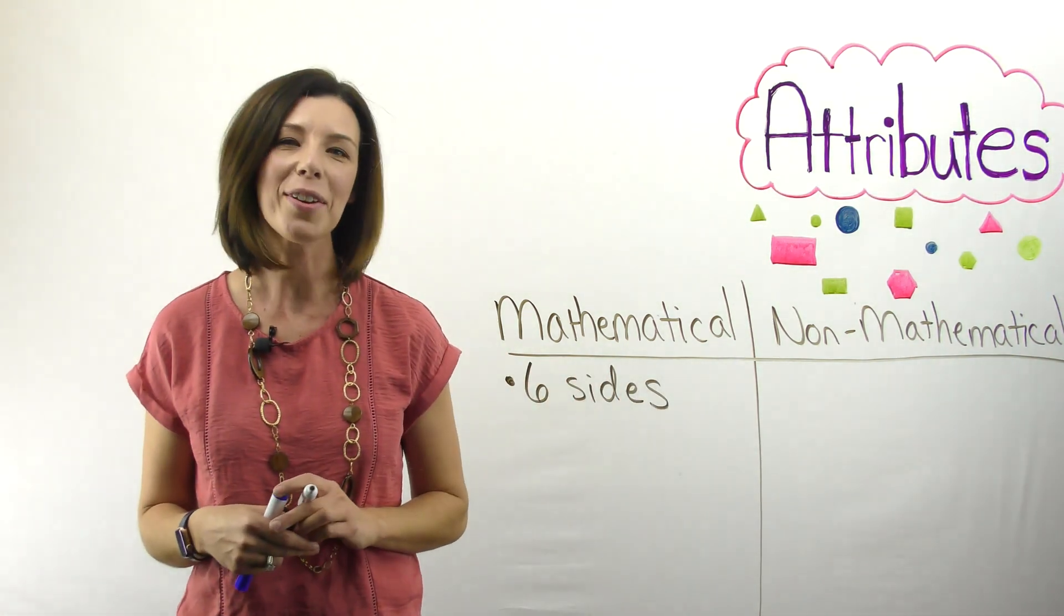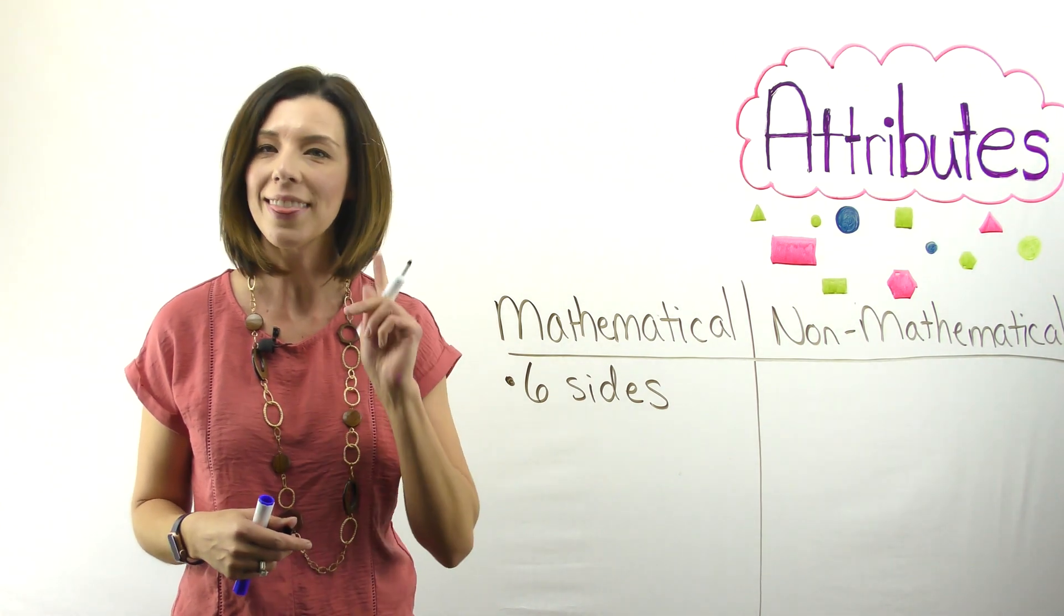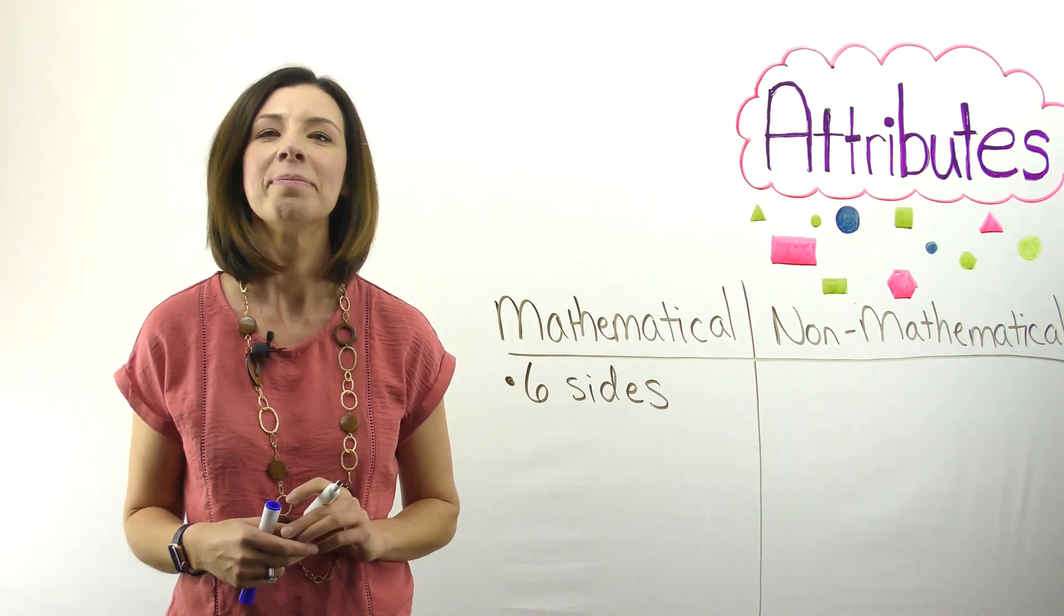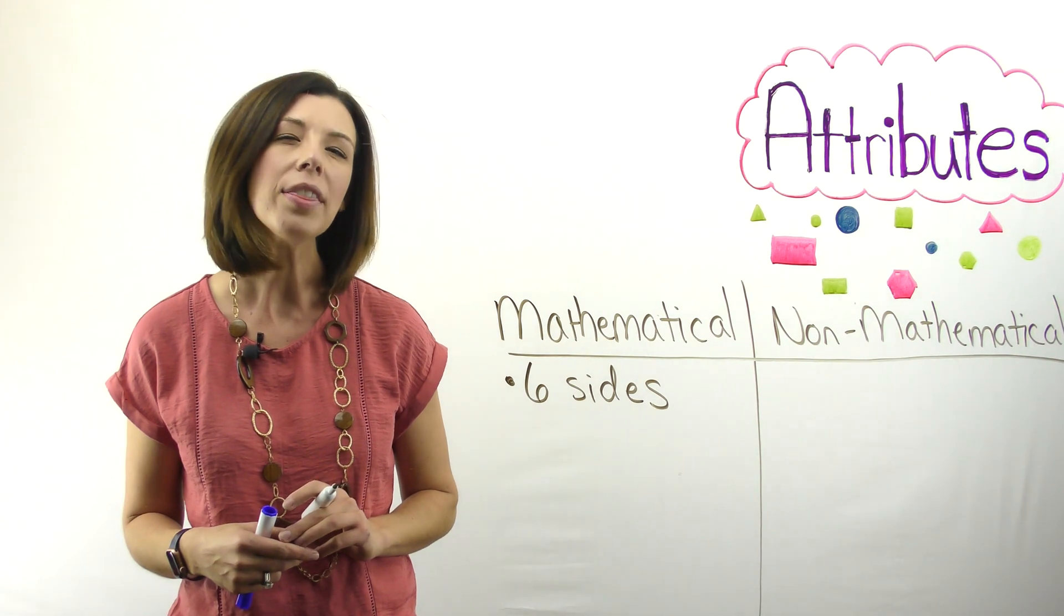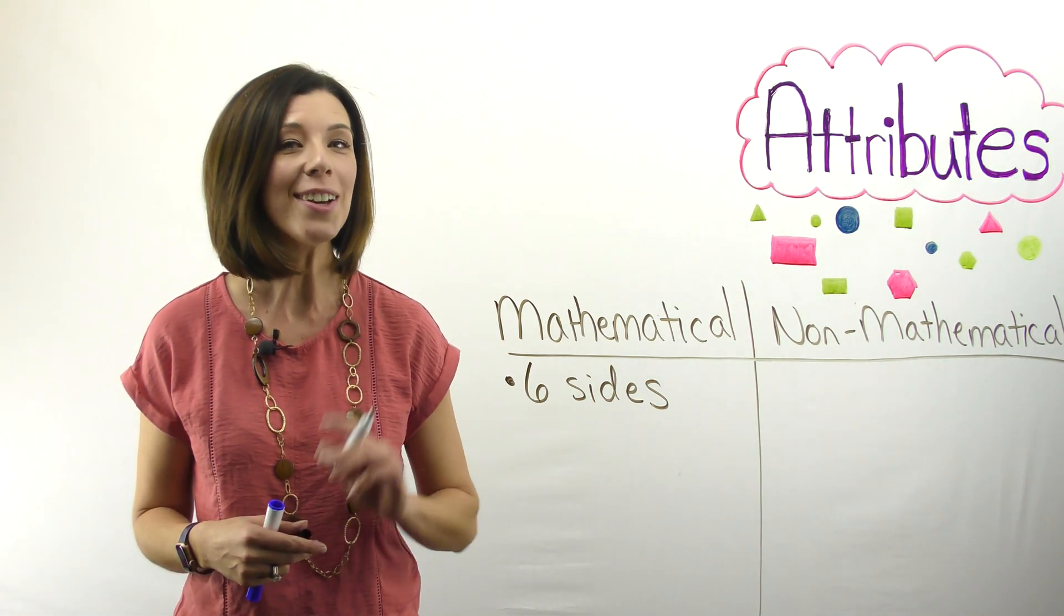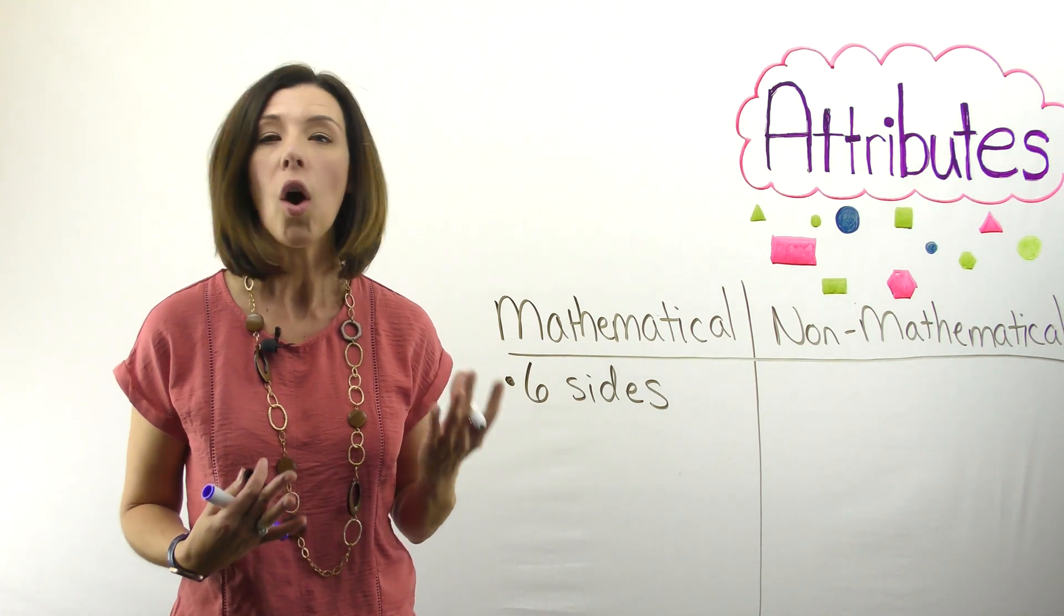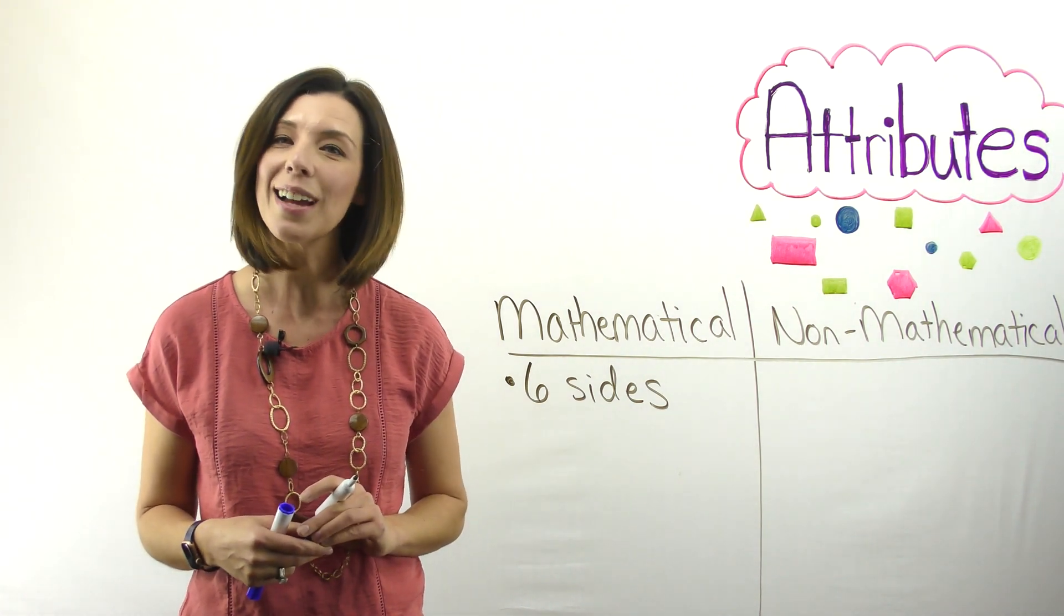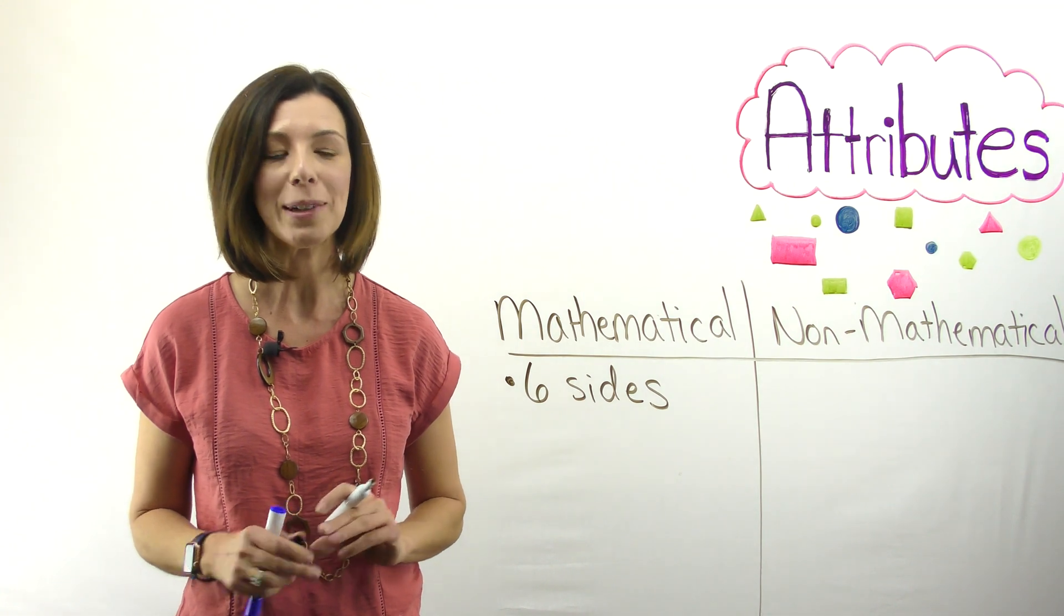Think about another mathematical attribute for that thin red hexagon. Here's a hint. How about the angles? What do you know about them? They are all obtuse angles. You are correct. All hexagons have six obtuse angles. That would be a mathematical attribute.